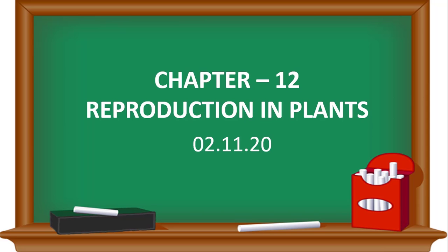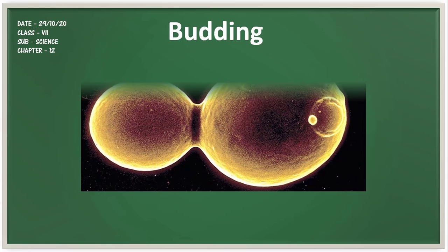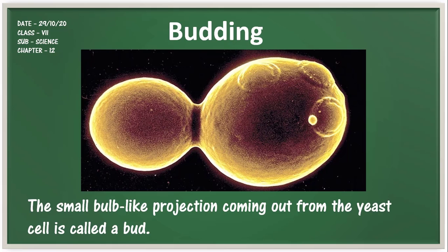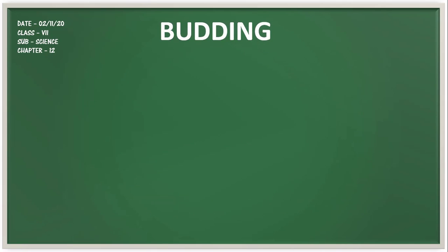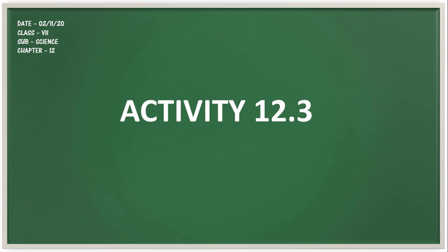Let's start with budding. A bud is a small bulb-like projection that comes out from a cell. In this picture, you can see a small bulb-like projection coming out from the yeast cell, which is called a bud. Budding is a type of asexual reproduction in which a new organism develops from an outgrowth or bud due to cell division at one particular site. The newly created organism is a clone, genetically identical to the parent organism.